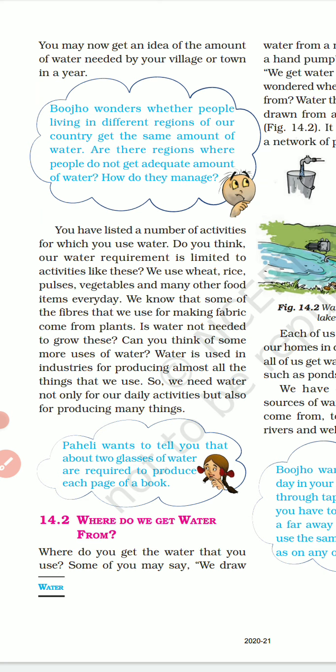You have listed activities for which you use water, but do you think our water requirement is limited to just those activities? We use wheat, rice, pulses, vegetables, and many other food items every day. We know that some fibers used for making fabric - like cotton and jute - come from plants. Is water not needed to grow these? Water is also used in industries for producing almost everything we use.